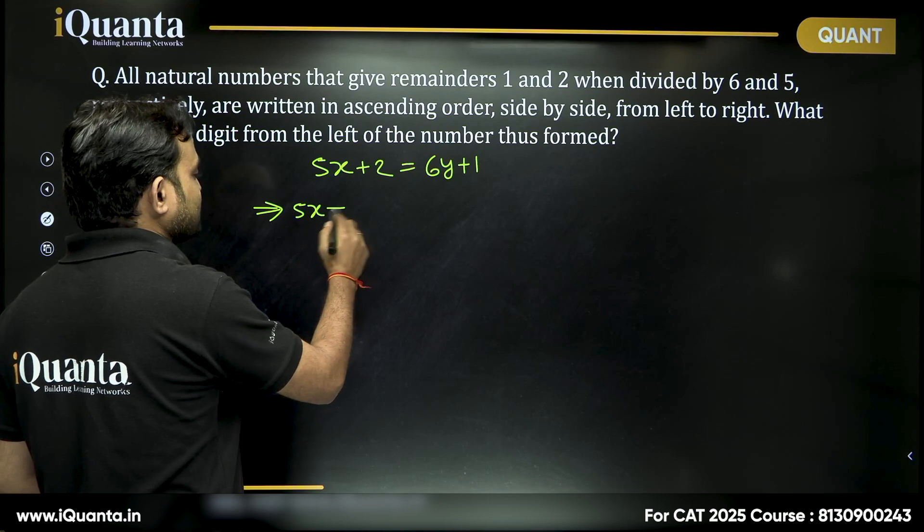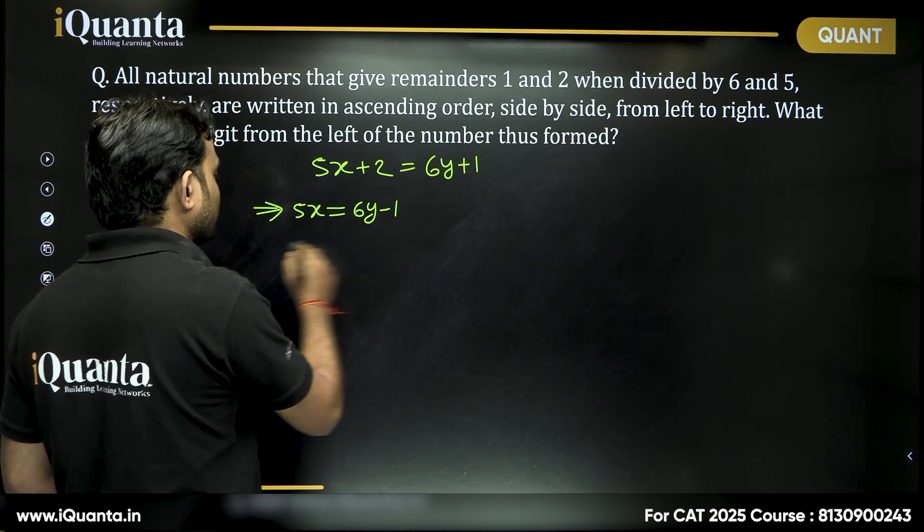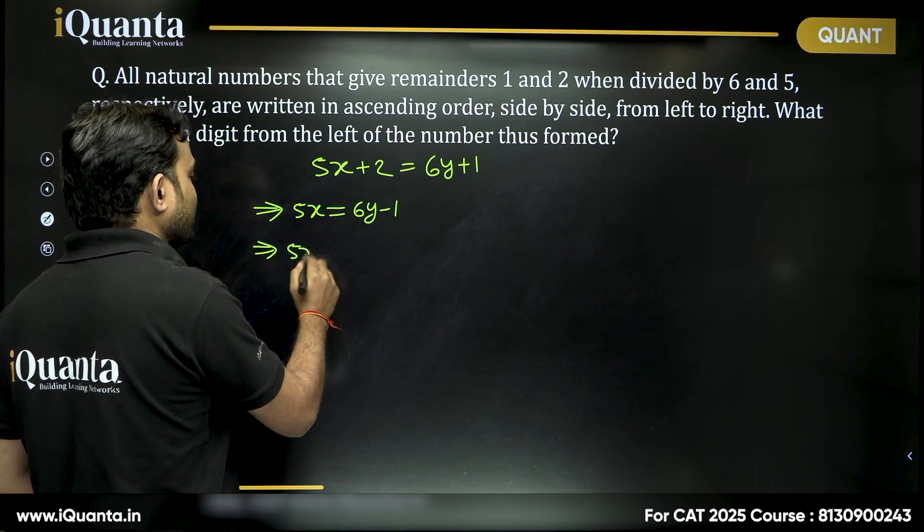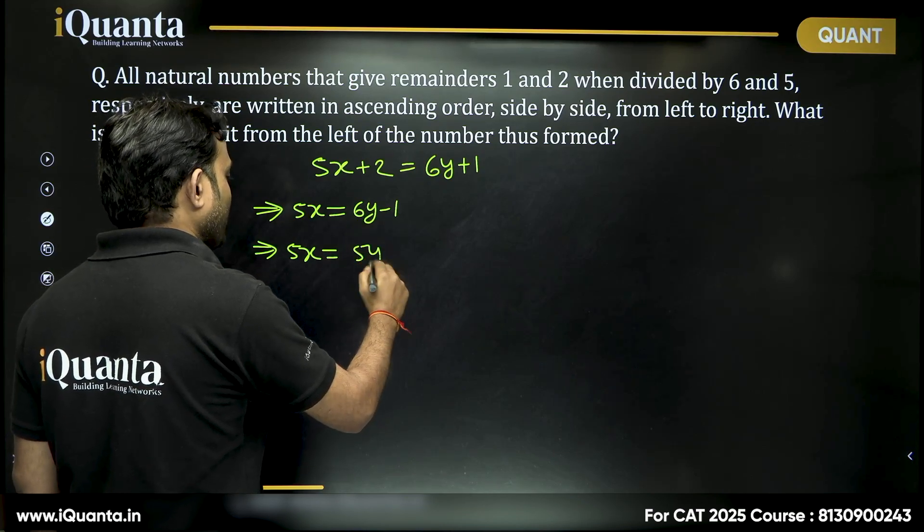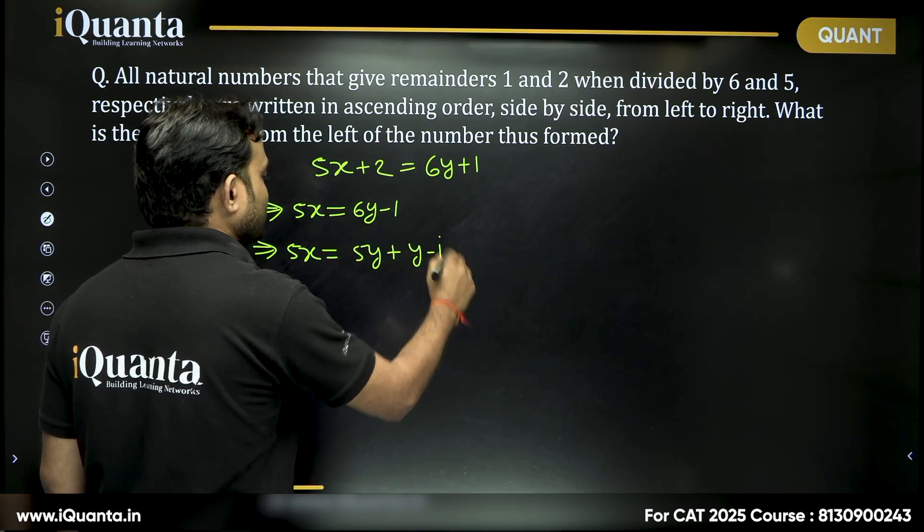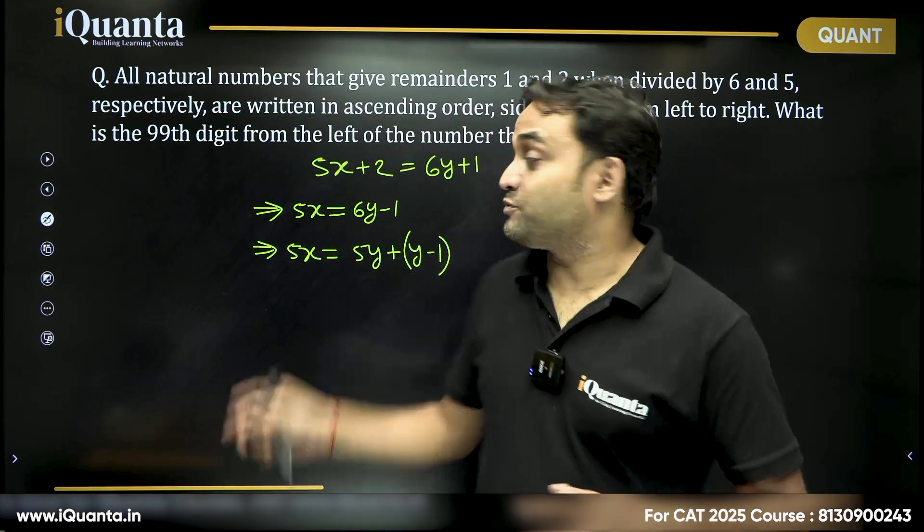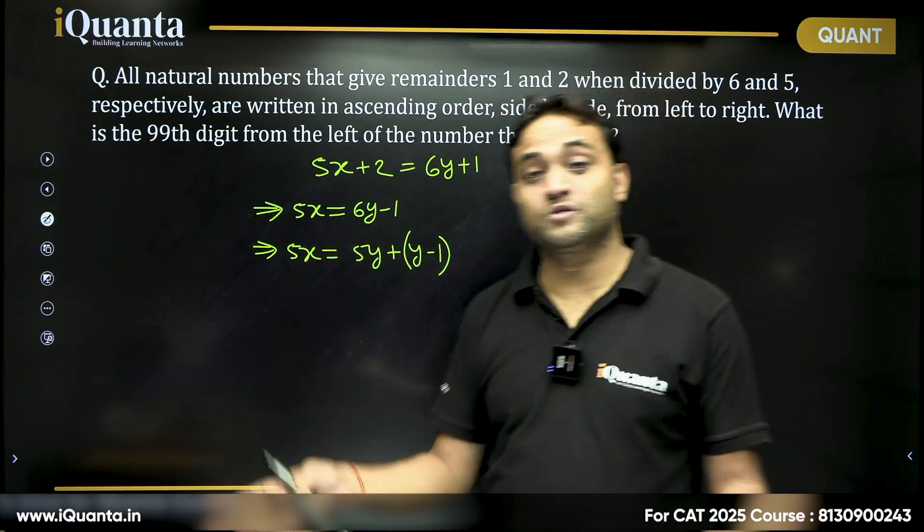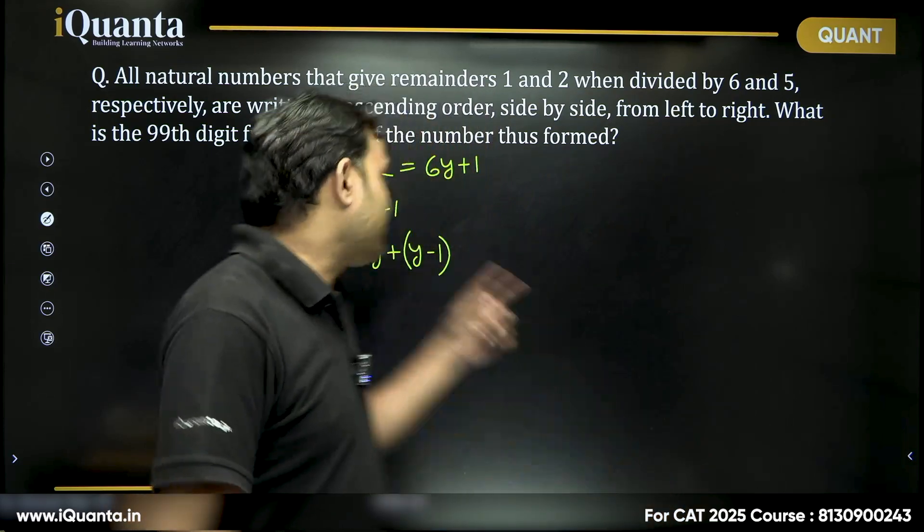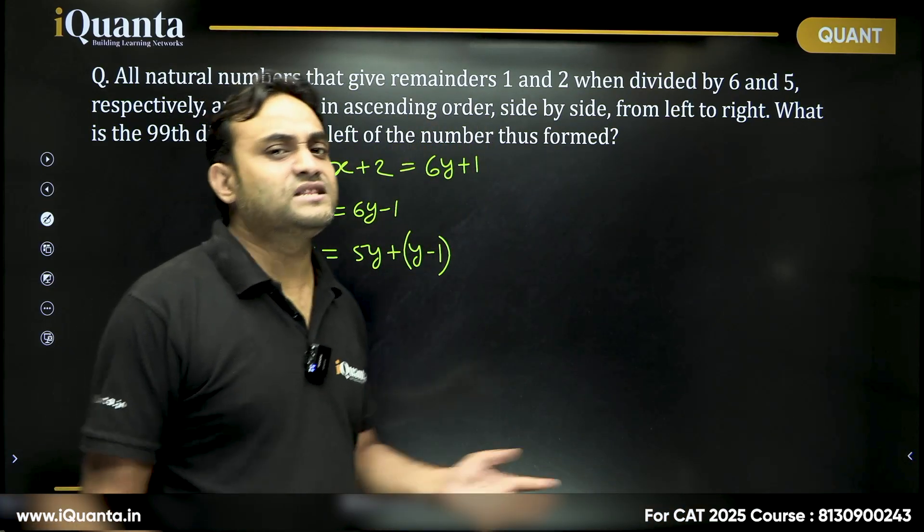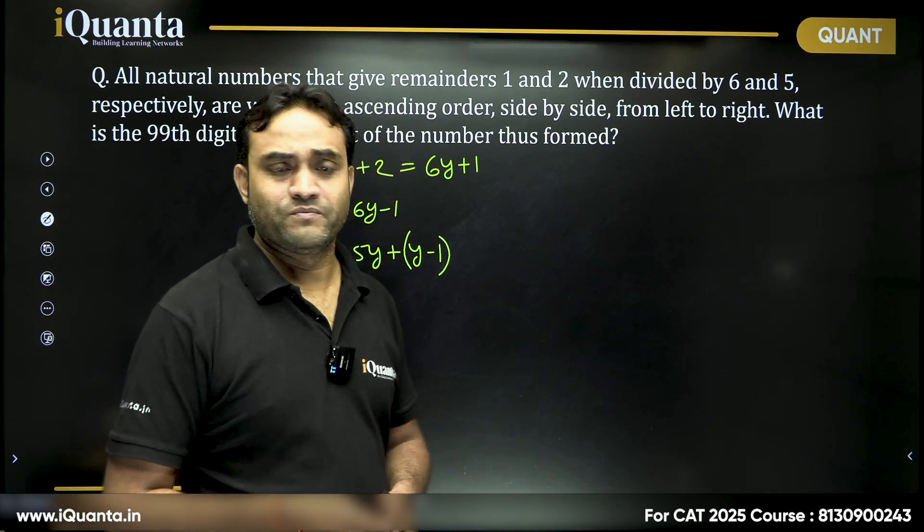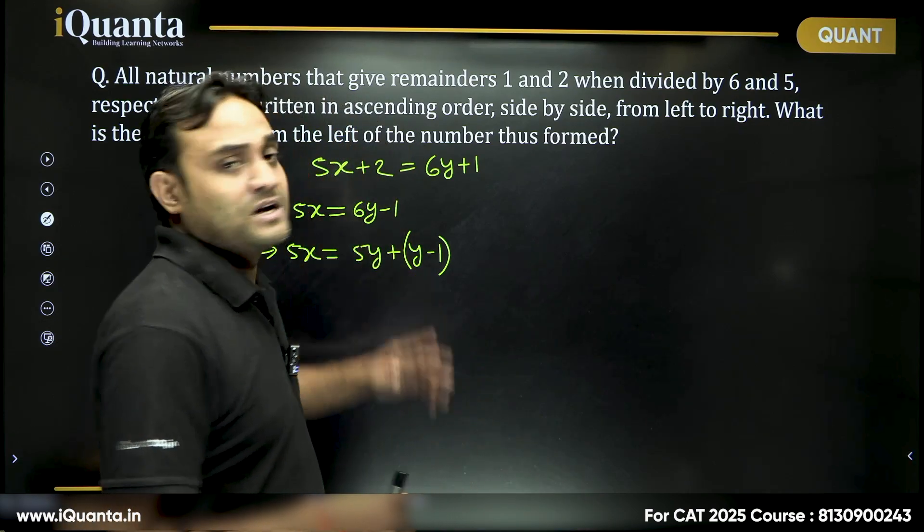Can we write 5x equals 6y minus 1, which we can write 5x equals 5y plus y minus 1? Now, left hand side is a multiple of 5, right hand side must also be a multiple of 5. 5y is a multiple of 5 already. y minus 1 should either be 0 or multiple of 5, then only this will become a multiple of 5.